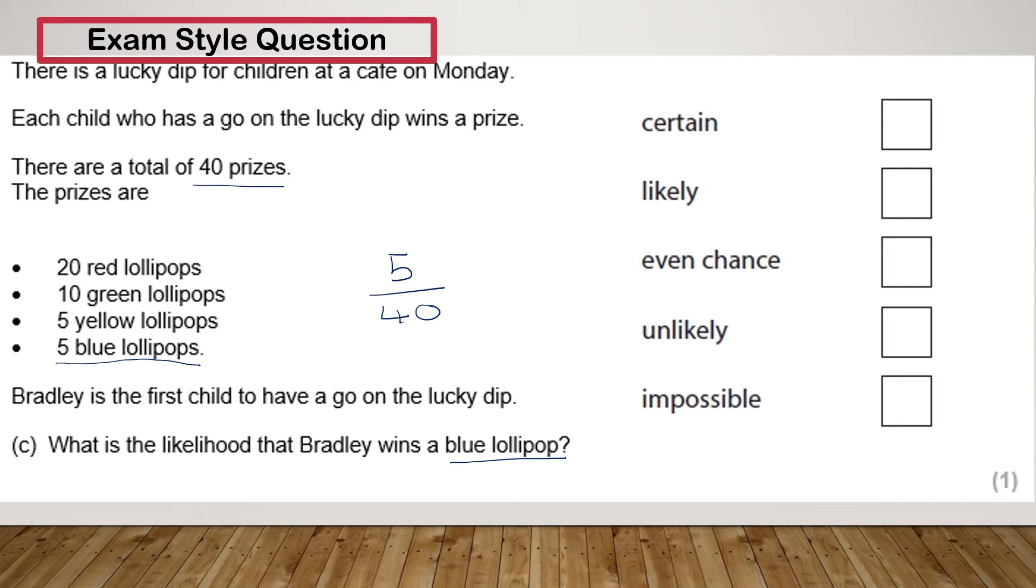Now for it to be even chance, it would need to be a half. Now to express a half over 40, it would be 20 over 40. Certain would be 40 over 40, so if there was only blue lollipops, and impossible would be zero, so if there was no blue lollipops. Now 5 over 40 is not impossible, but it's lower than even chance, so therefore it's unlikely.